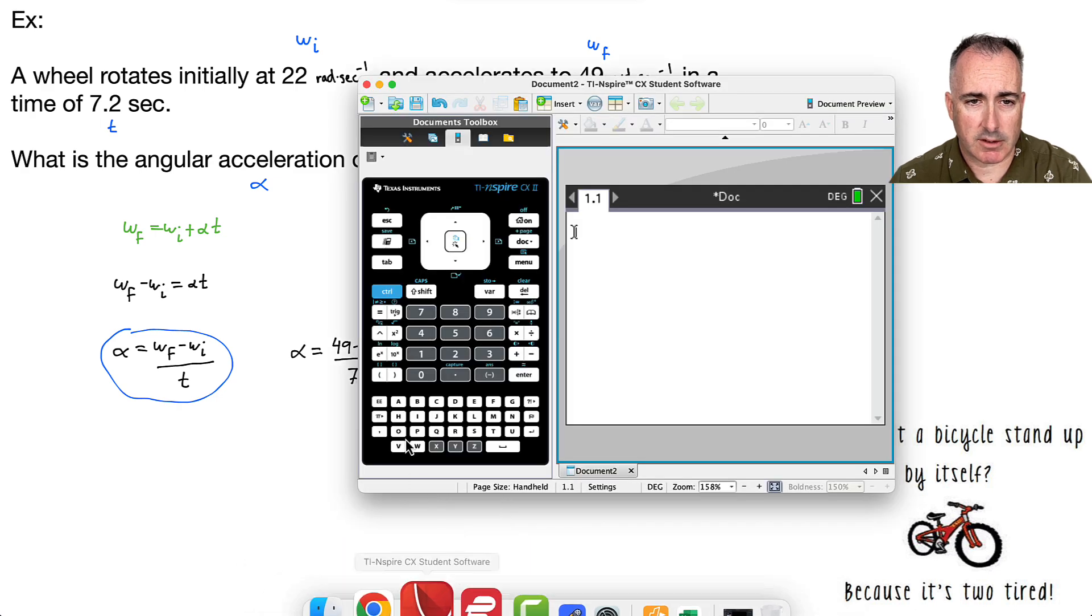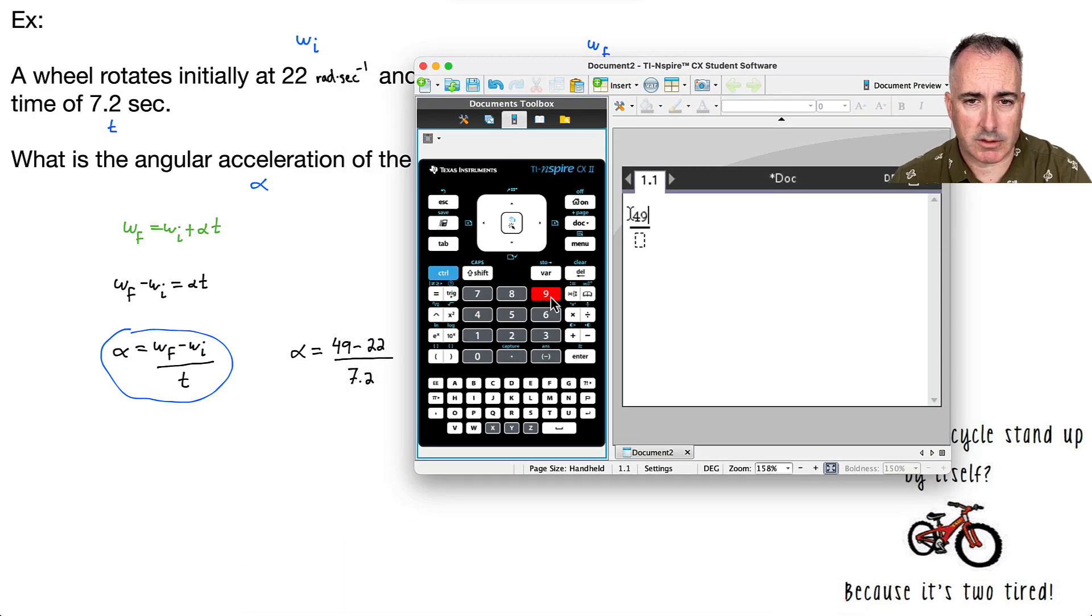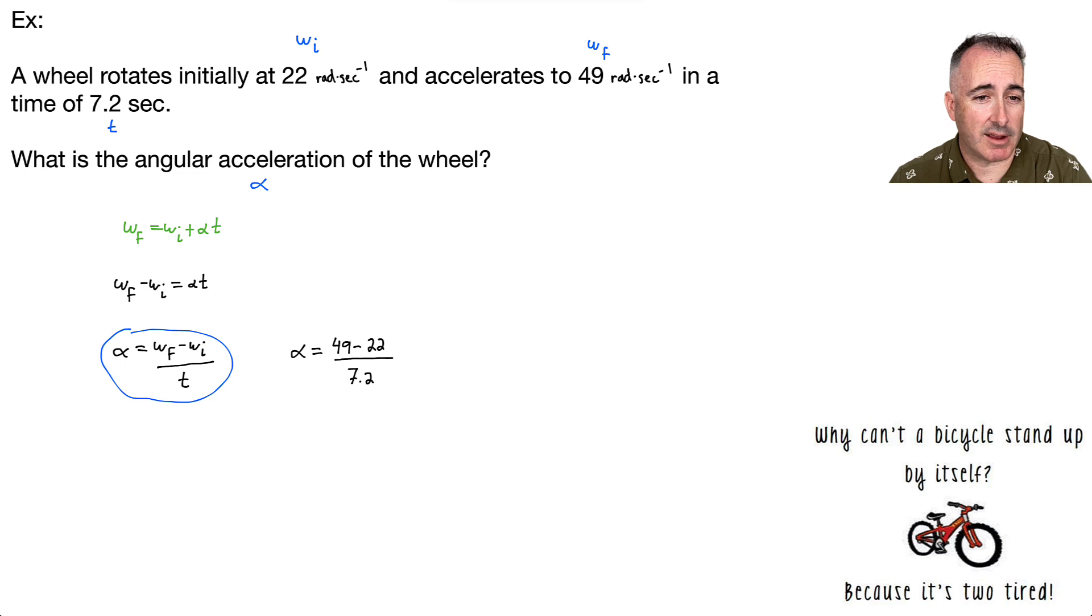So let me do that on my calculator. So I've got 49 minus 22. Oh, I could have done that in my head, but oh well, I'm lazy. Over 7.2. And that's 3.75.